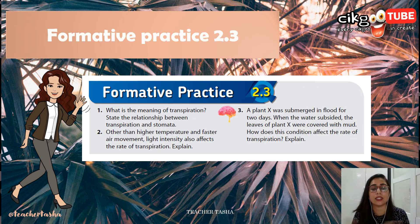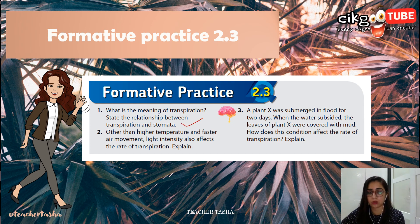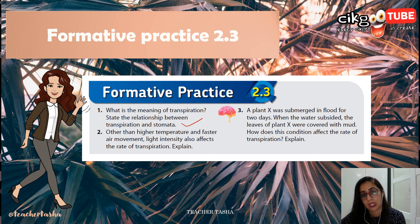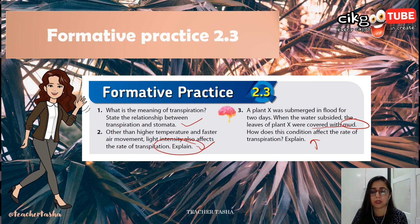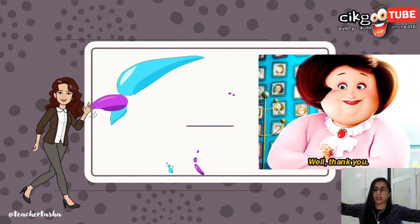For formative practice 2.3, the questions are: What is the meaning of transpiration, and state the relationship between transpiration and stomata? Other than higher temperature and faster air movement, how does light intensity affect the rate of transpiration? And: Plant X was submerged in flood for two days; when the water subsided, the leaves were covered with mud — how does this condition affect the rate of transpiration? Check your answers in the description box below.